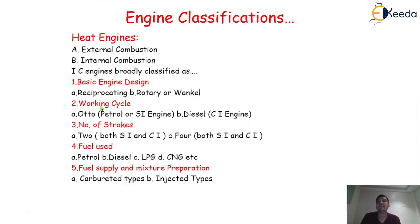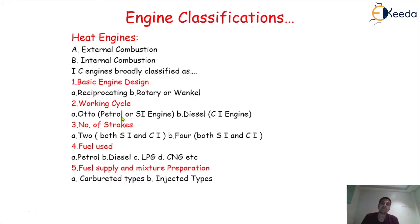Then, according to the working cycle, the IC engine is again classified. One is the Otto cycle, also called the petrol cycle, which is used in the case of SI (spark ignition) engine. Another cycle is called the diesel cycle, which is also called the cycle for CI (compression ignition) engine.